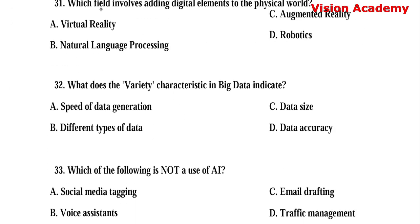Question number 31. Which field involves adding digital elements to the physical world? Option A: Virtual reality. Option B: Natural language processing. Option C: Augmented reality. Option D: Robotics. Here, option C, augmented reality, is the right answer.